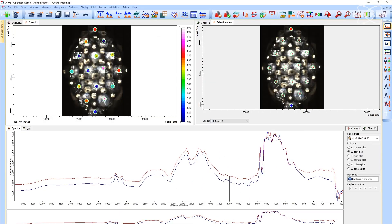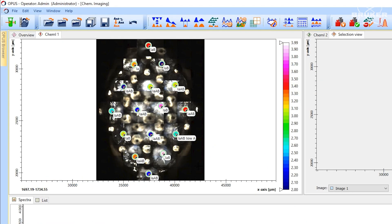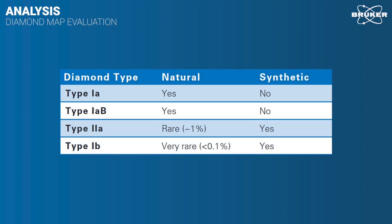Those spectra can be evaluated fully automatically by our OPUS software. With a few clicks, the analysis result is presented to the user almost instantly. After a few seconds, all inspected diamonds are classified as either Type 1a or as a subcategory of 1a. In this table you can see the typification regarding its natural or synthetic origin.